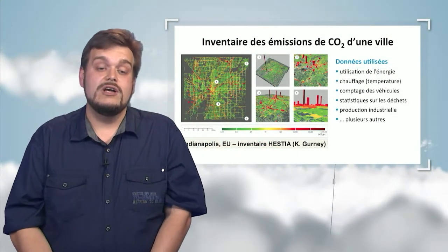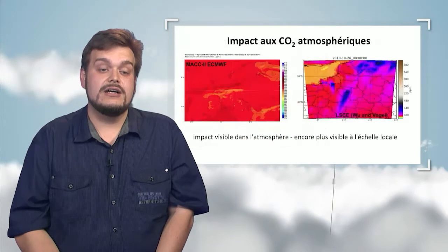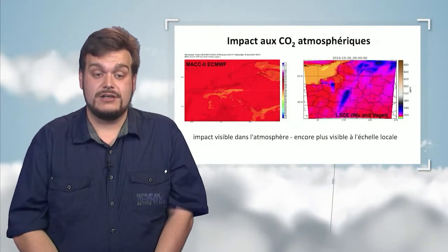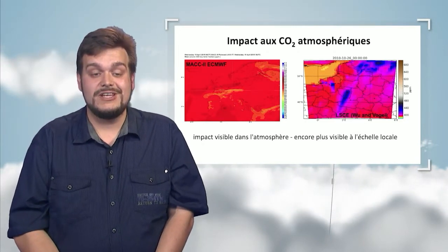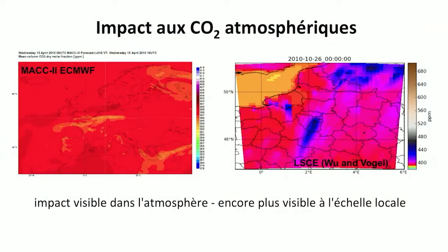Now that we have had a look at CO2 emissions, we need to try and understand their impact in the atmosphere. On the left-hand side picture, we have a model made from a European map with concentration gradients in the atmosphere. The colors are red and yellow, and urban areas are visible, but not so much. Whereas on the right-hand side, the modeling is made for a very specific area, the Paris area.